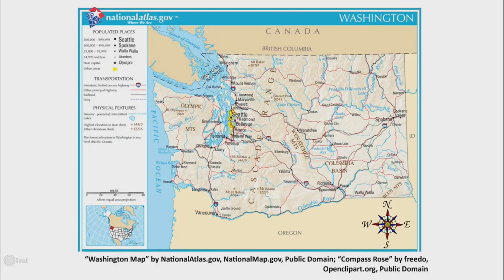This is a map of Washington State. You can see the key on the left. There are cities, highways, mountains, rivers, and an ocean.